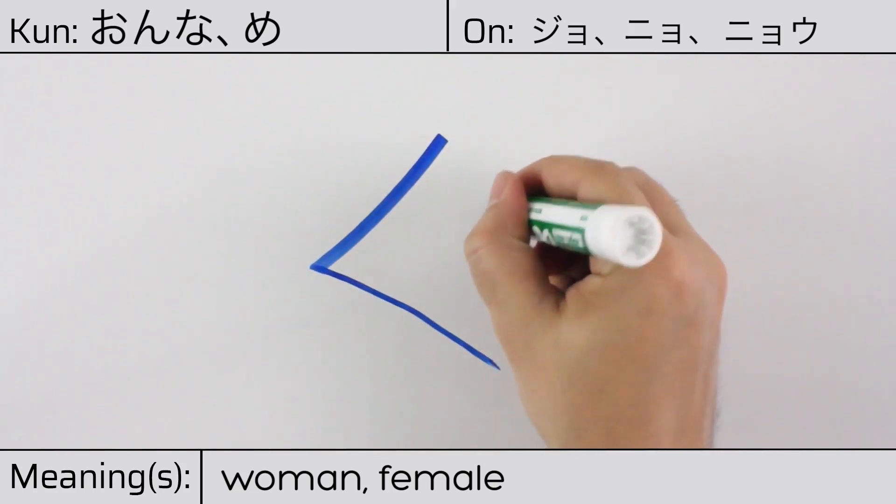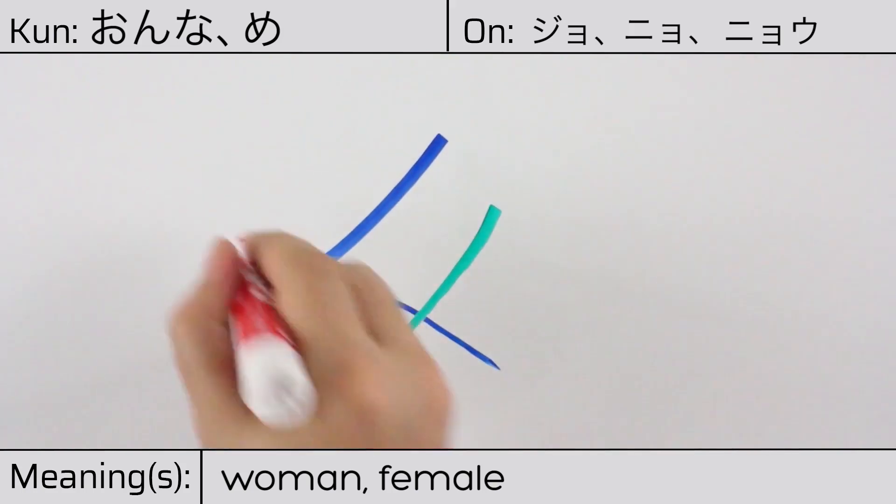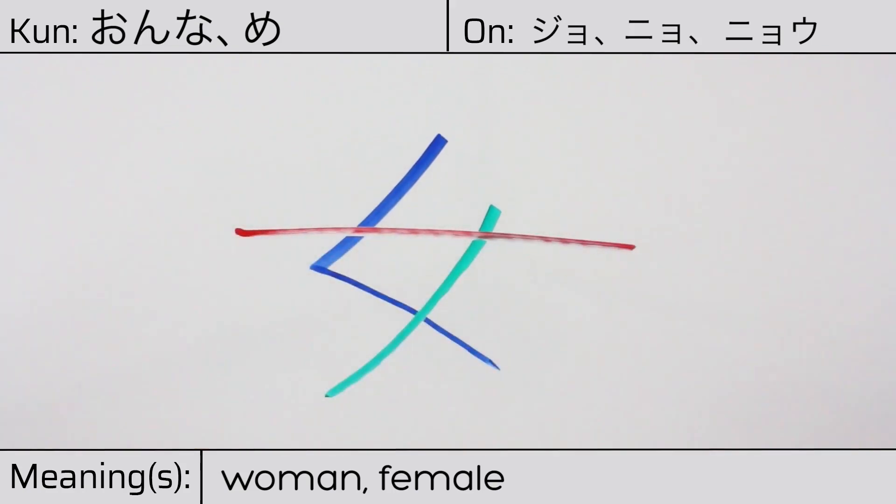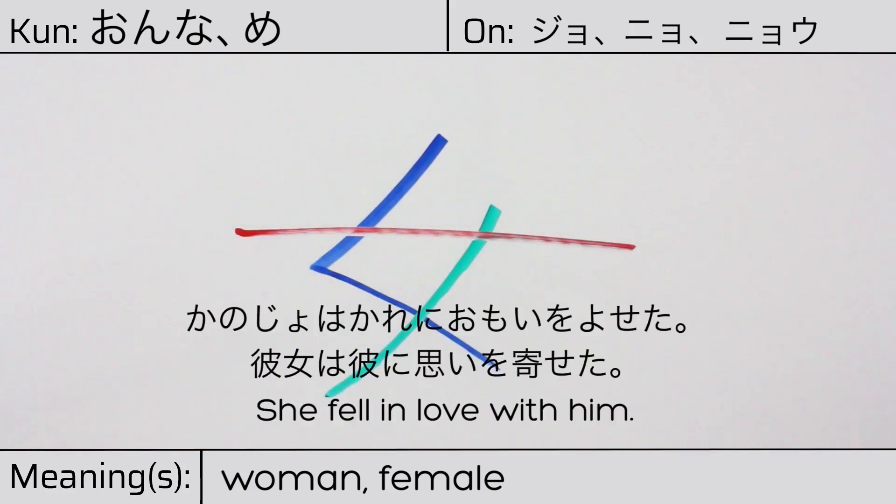Our example sentence is 彼女は彼に思いを寄せた. She fell in love with him.